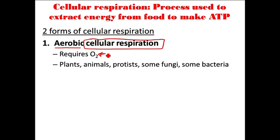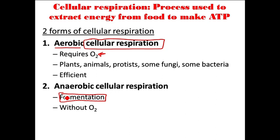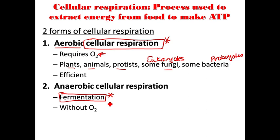Aerobic cellular respiration is a very efficient form, much more so than the second form. The second form is called anaerobic cellular respiration — anaerobic means without oxygen — and we usually just call it fermentation. So these are the two names we go by: cellular respiration and fermentation. Cellular respiration requires oxygen; eukaryotic organisms — plants, animals, protists, and fungi — and some bacteria use this. Fermentation without oxygen is used by many bacteria and some yeast, which are actually eukaryotes and a type of fungus. Fermentation is less efficient.